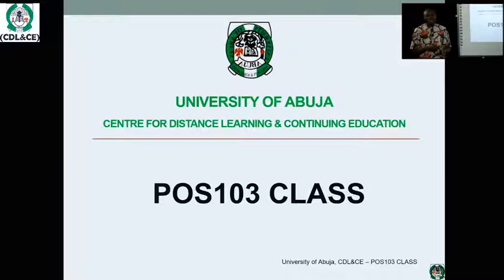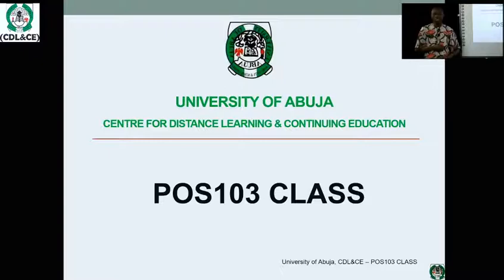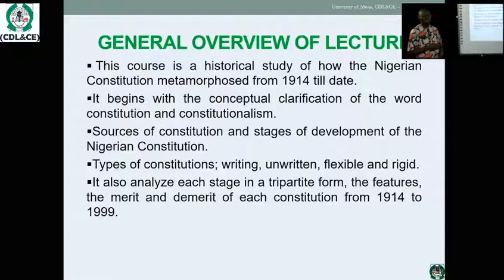The journey of the Nigerian constitution began in 1914 with the Nigerian Council, followed by the Clifford Constitution of 1922, the Richard Constitution of 1946, the Macpherson Constitution of 1951, and the Lyttleton Constitution of 1954. Then came the constitutional conferences of 1958 and 1959 in London, the 1960 independence constitution, the 1963 constitution, the 1979 constitution, and finally what we have today as the 1999 constitution. This course is essentially a historical study of the Nigerian constitution.